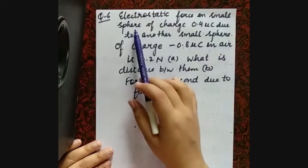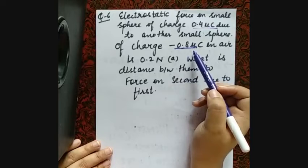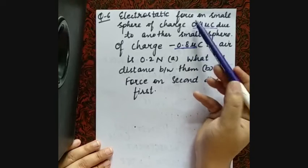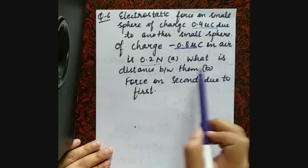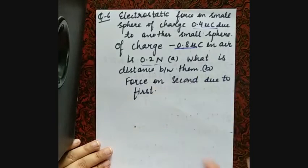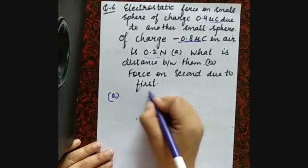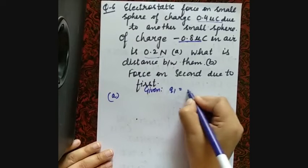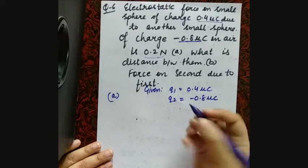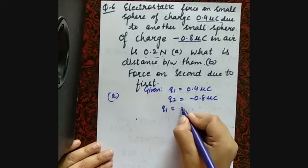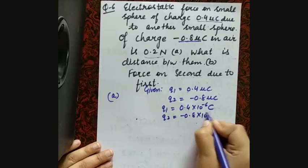Question six: electrostatic force on a small sphere of charge 0.4 microcoulombs due to another sphere of charge -0.8 microcoulombs. Since one is positive and one is negative, there is an attractive force. The force given is 0.2 Newton. Part one: find the distance between them. Part two: find force due to the second charge on the first. Given: Q1 = 0.4×10⁻⁶ C, Q2 = -0.8×10⁻⁶ C.